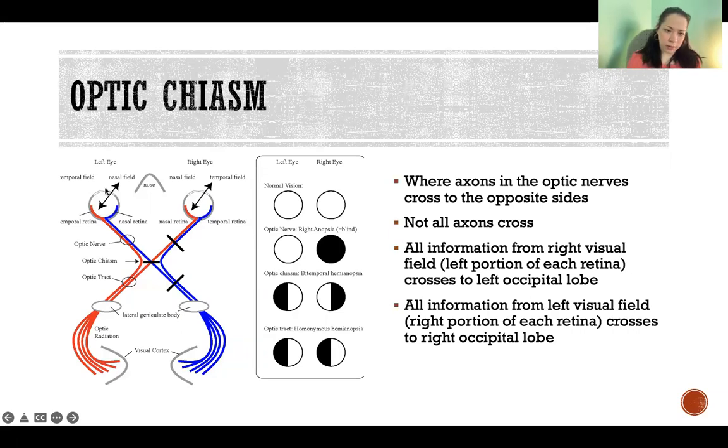So essentially what happens is the axons that are carrying that information from the right and left visual fields, or coming from the left and right portions of the retina, that information gets separated at the optic chiasm.